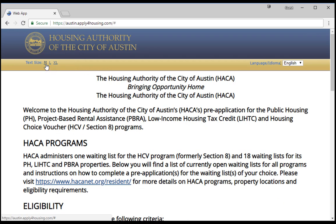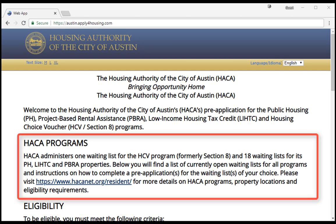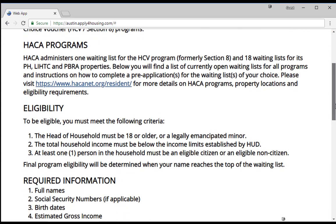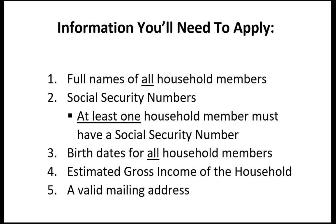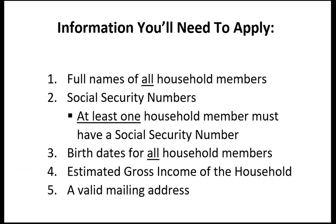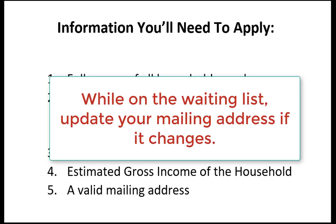Also on this page, you will find information about the housing programs provided by the Housing Authority of the City of Austin — which we will refer to as HACA — as well as some basic eligibility information. To complete the application, you will need: full names of all household members, Social Security numbers (at least one member must have one), birth dates for all household members, estimated gross income, and a valid mailing address. HACA will send all communication by mail, so it is extremely important to enter the mailing address correctly. During your time on the waiting list, please be sure to update your mailing address whenever it changes, as missing a required appointment or deadline could cause you to lose your place on the waiting list.